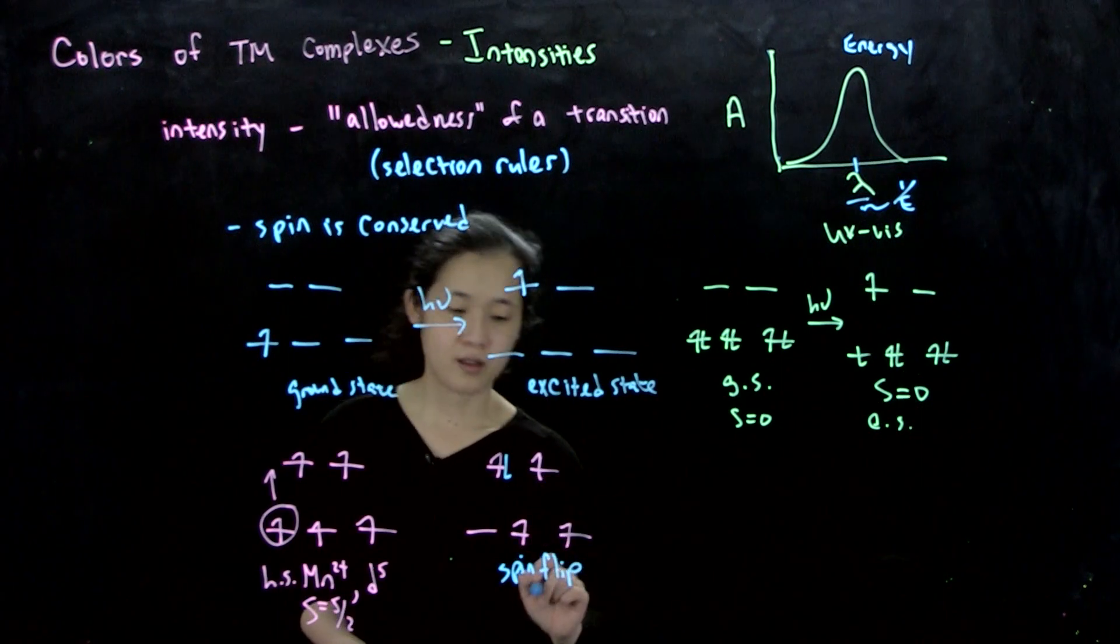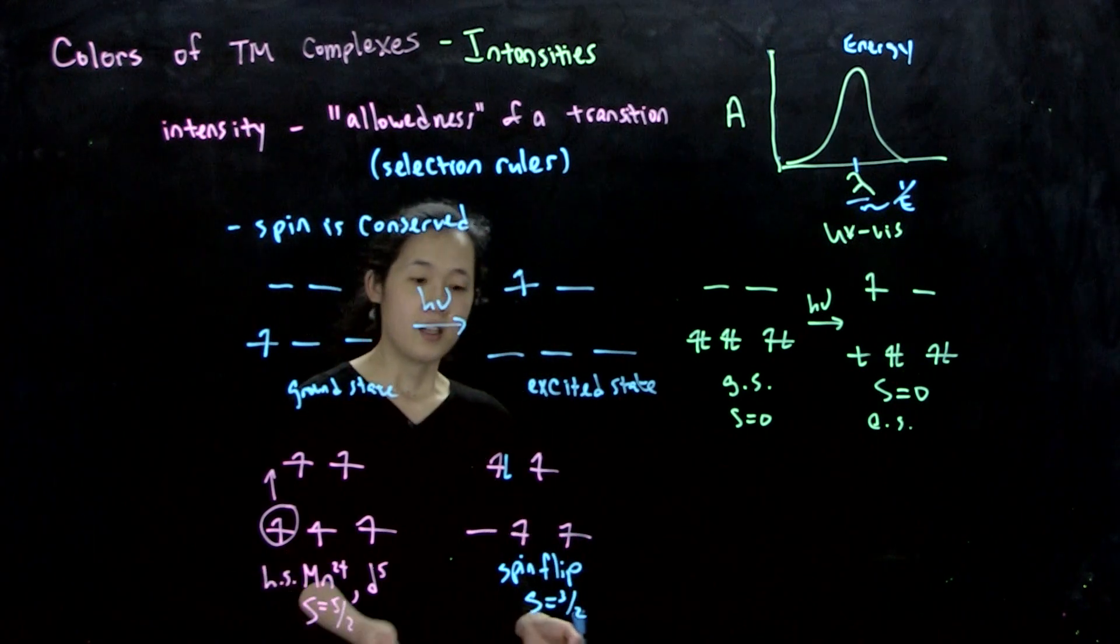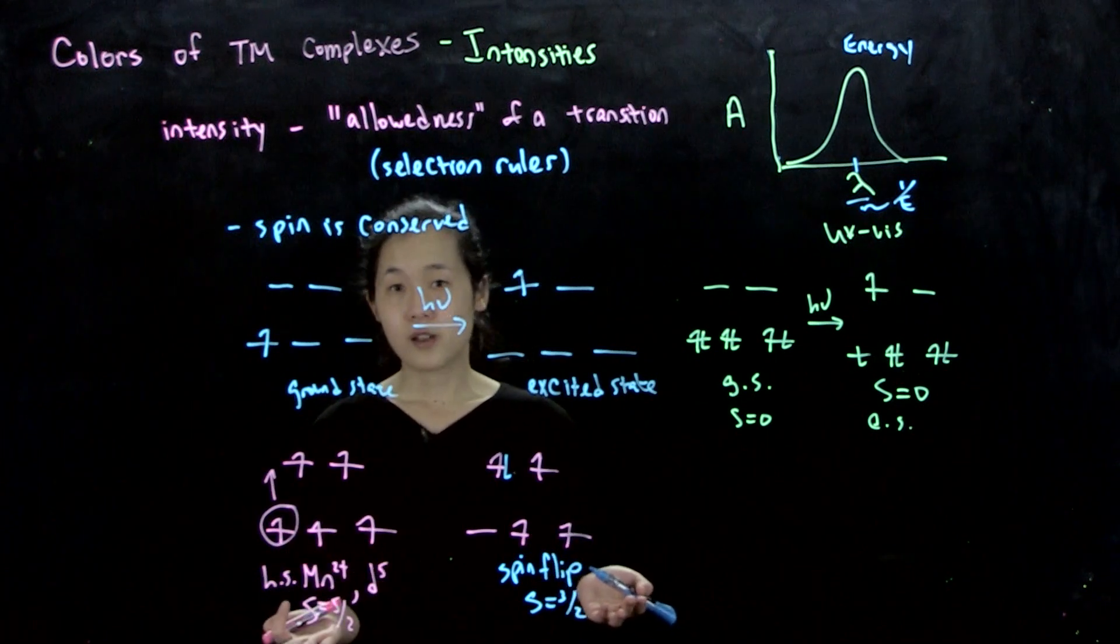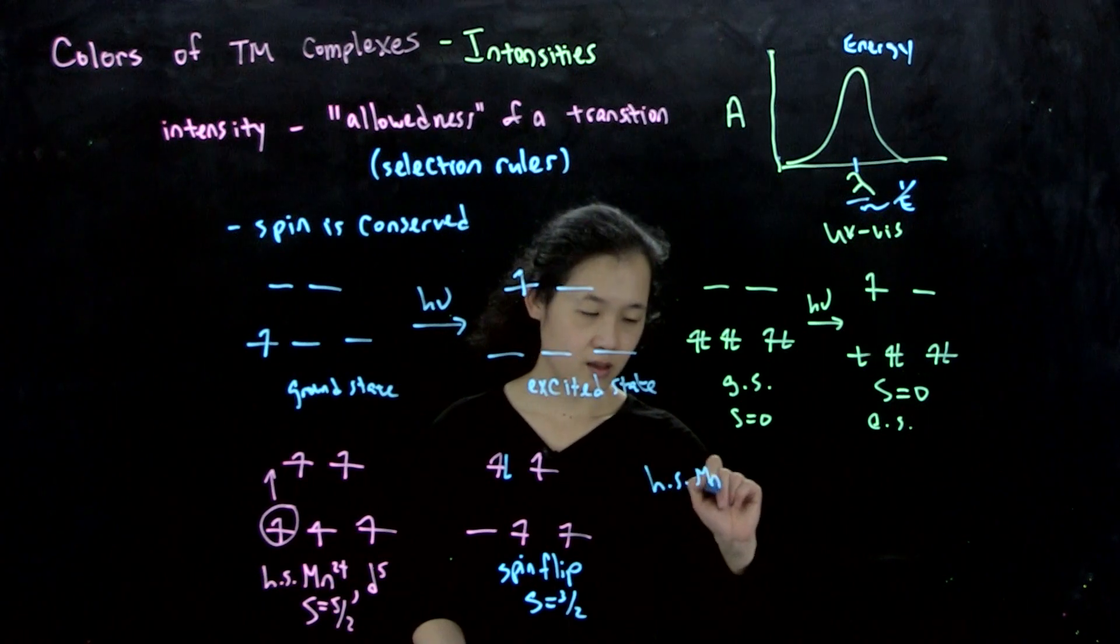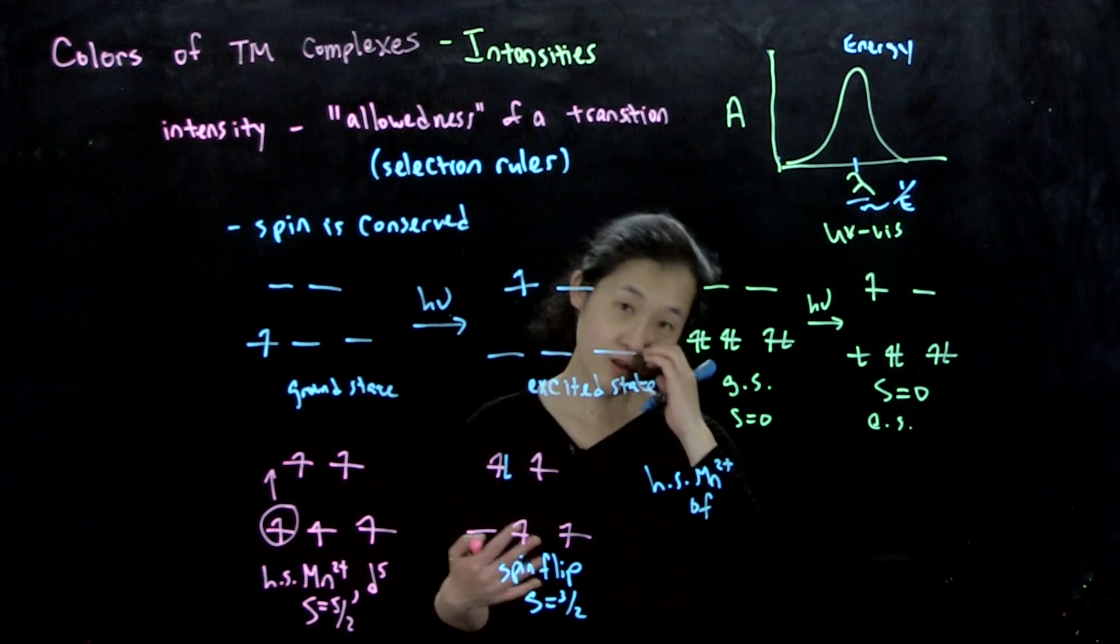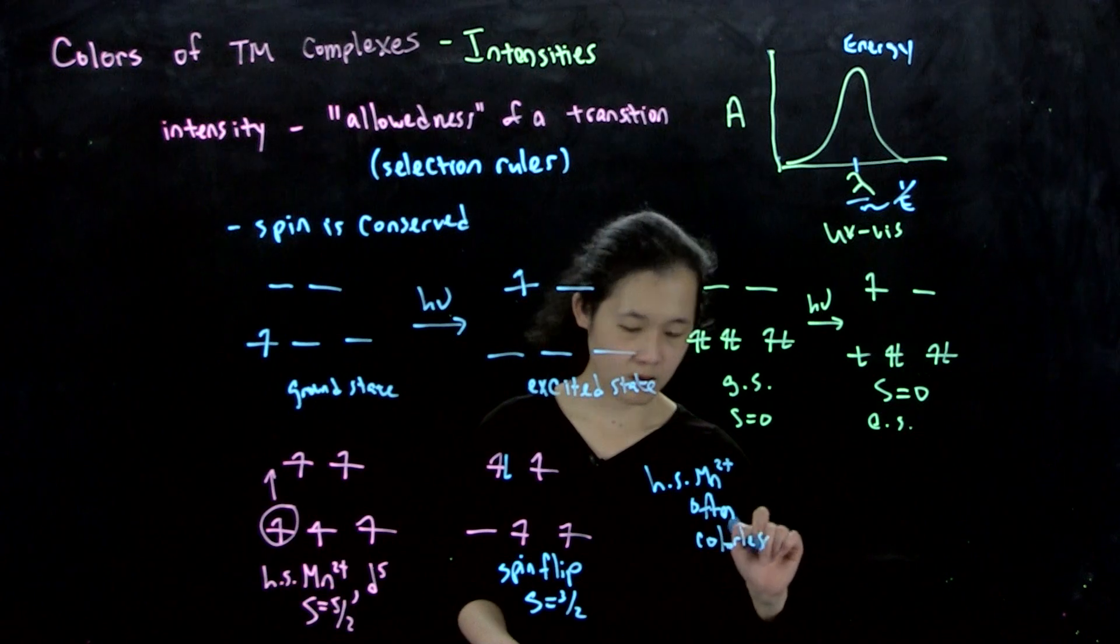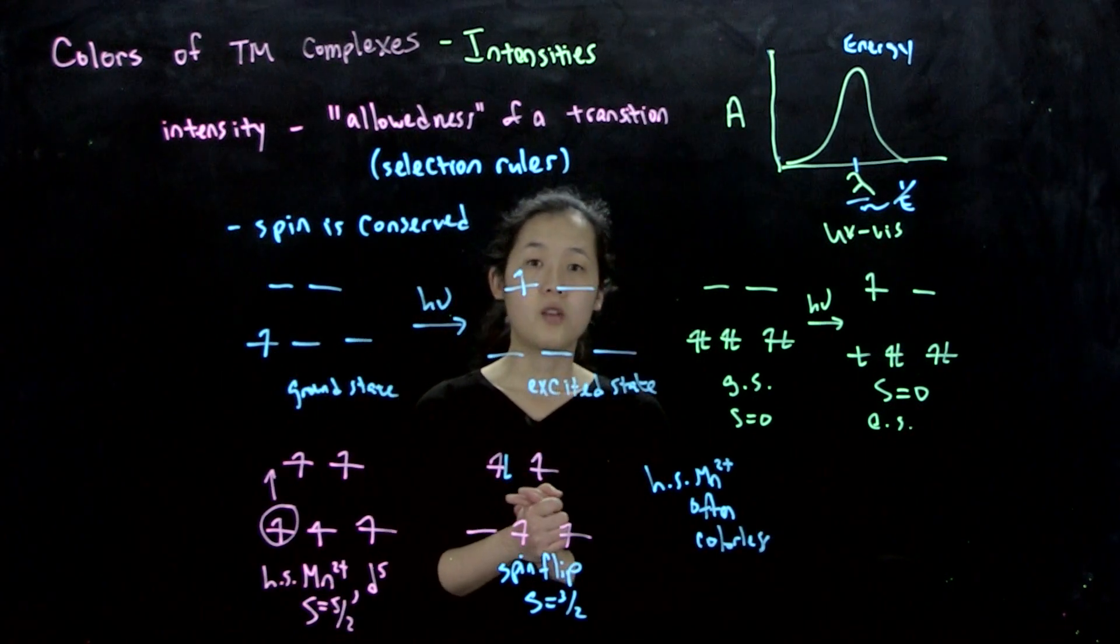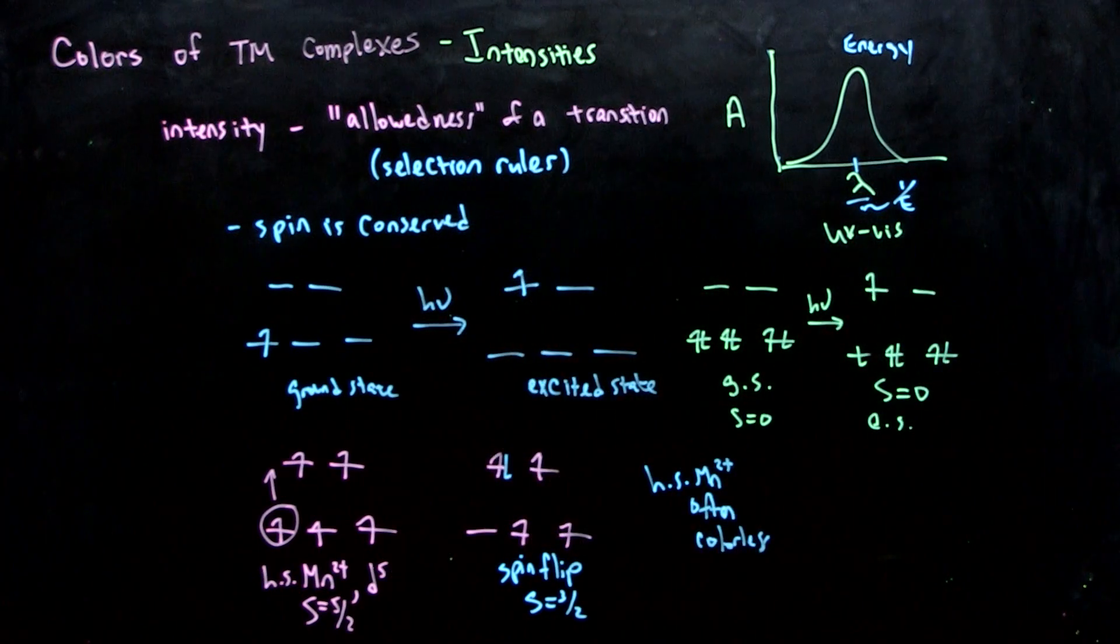And then our final s, this would be s equals three halves. So because of this, if spin is not conserved, then the intensity of the transition is going to be lower. So as a result, manganese 2 plus ions, or high spin manganese 2 plus, or d5, are often pale pink or colorless. So yes, allowedness is what governs your transition.